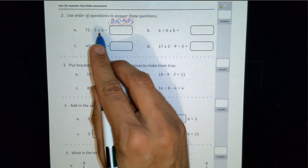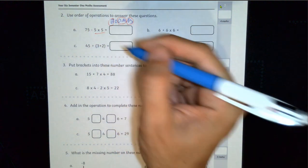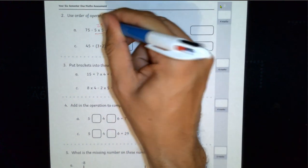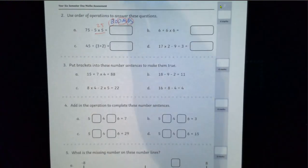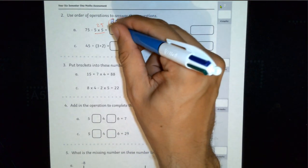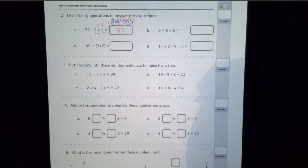So there's no brackets in this one, so we first go to DM. We've got a multiplication so that has to be done first. 5 times 5 is 25, 75 take 25 will be 50. You can do a little subtraction on the side if you needed to for that one.